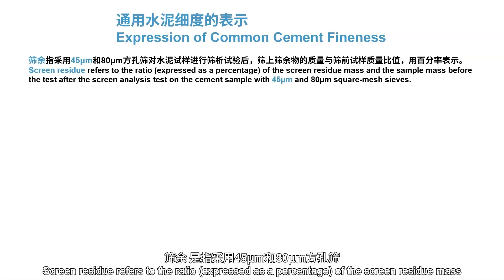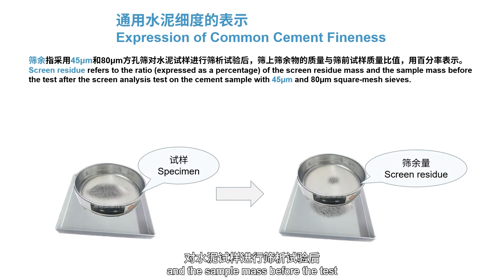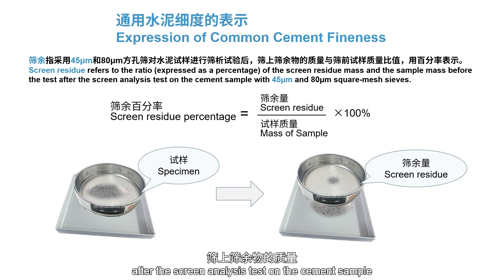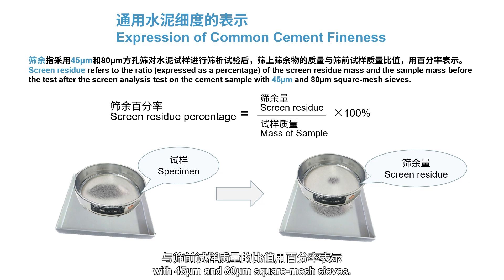Screen residue refers to the ratio expressed as a percentage of the screen residue mass and the sample mass before the test, after screen analysis on the cement sample with 45 micrometers and 80 micrometers square mesh sieves.